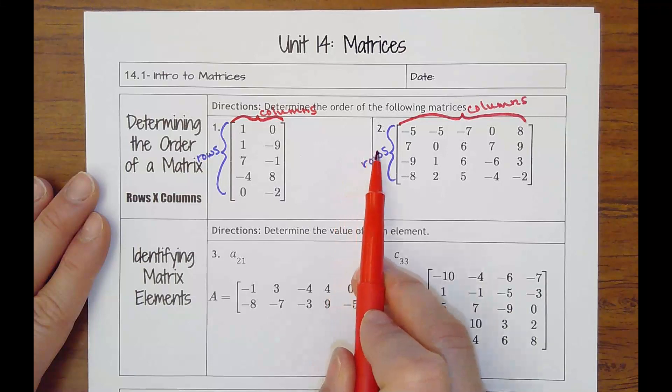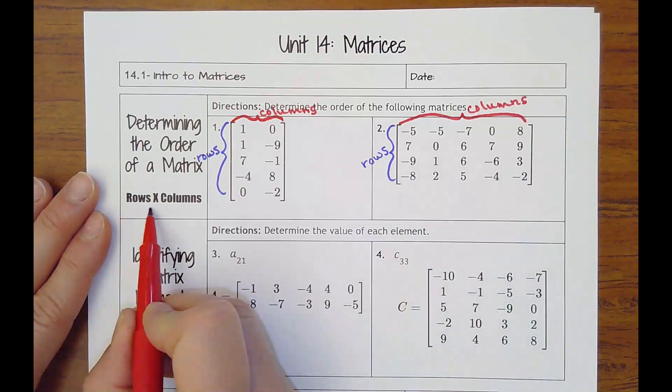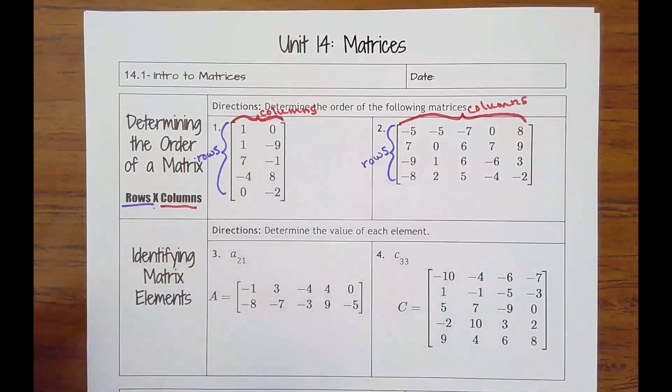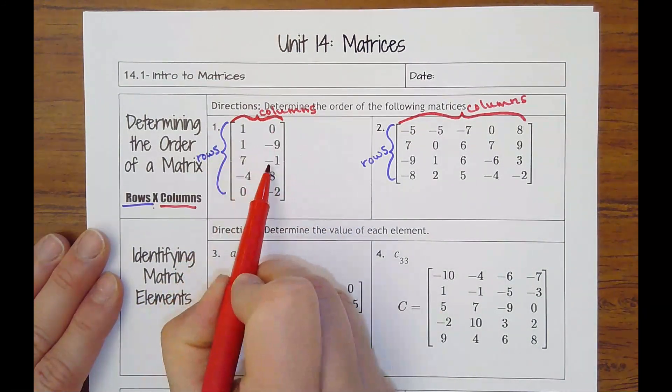Our first instructions say to determine the order of the following matrices. So the order is giving it the dimensions, and you always want to go rows by columns. I went ahead and labeled here that you should know rows is how many horizontal elements you have.